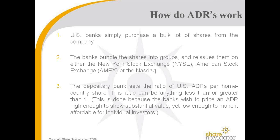So how do ADRs work? It's pretty simple really. US banks simply purchase a bulk lot of shares of the company. Then the banks bundle the shares into groups and reissue them on the New York Stock Exchange, the American Stock Exchange, or the NASDAQ. And they may not do it exactly one for one. So in the case of Bank of Ireland, what they did is one for four — and I'll explain that very quickly in the next slide.